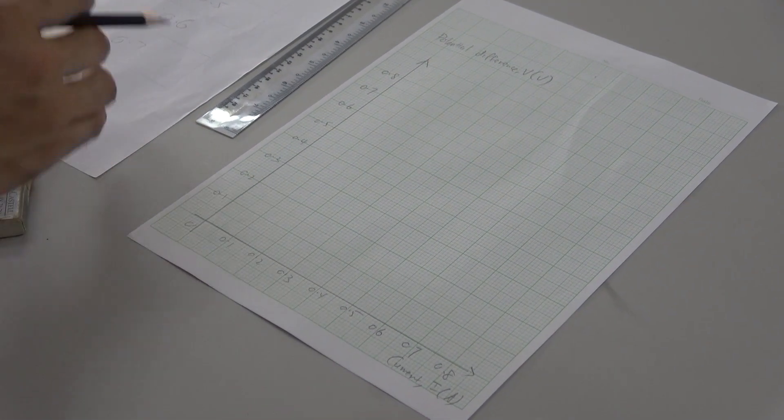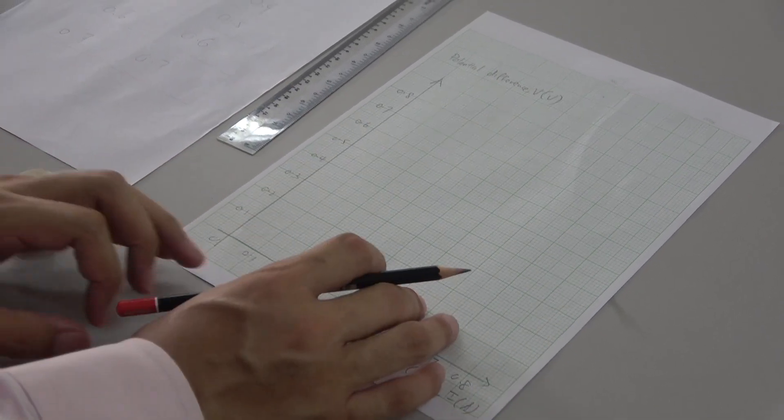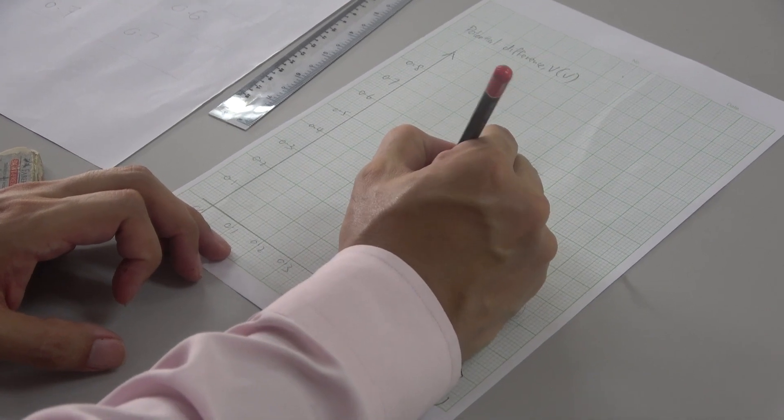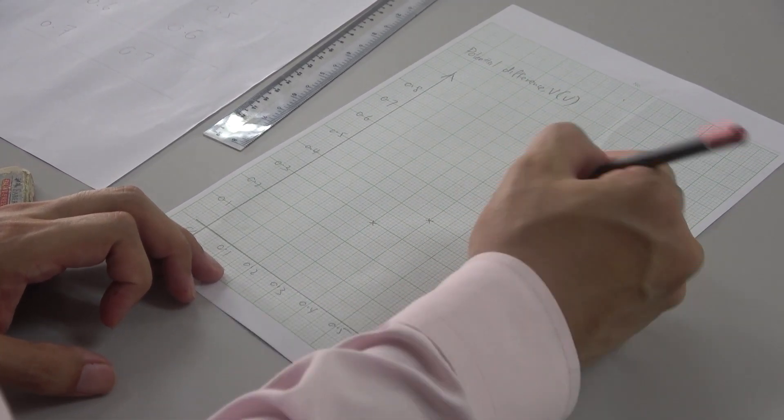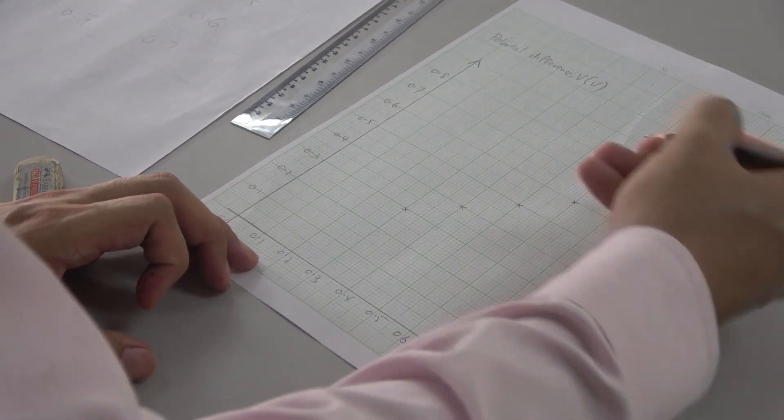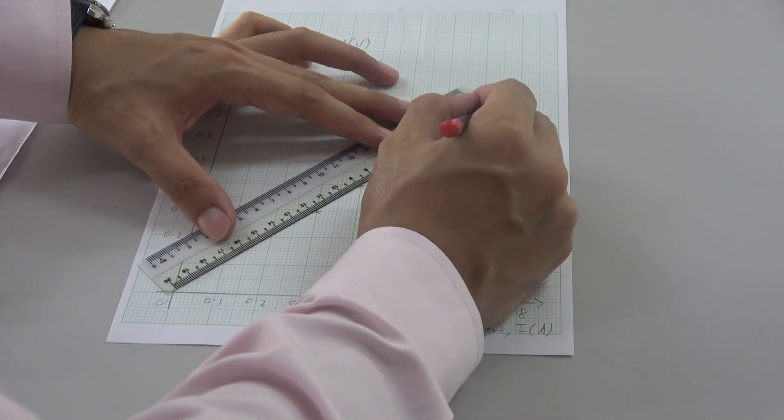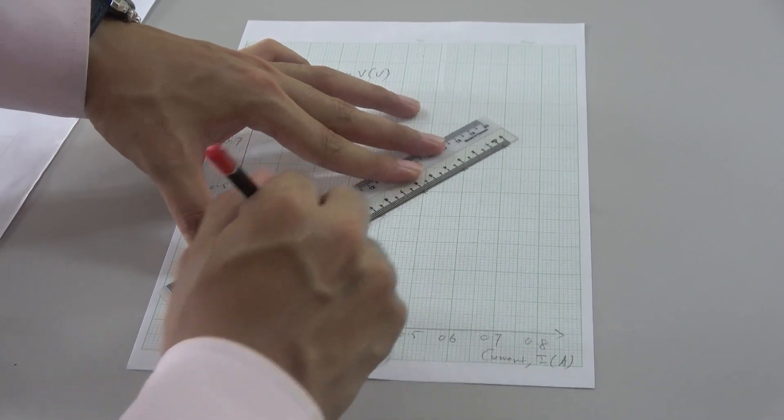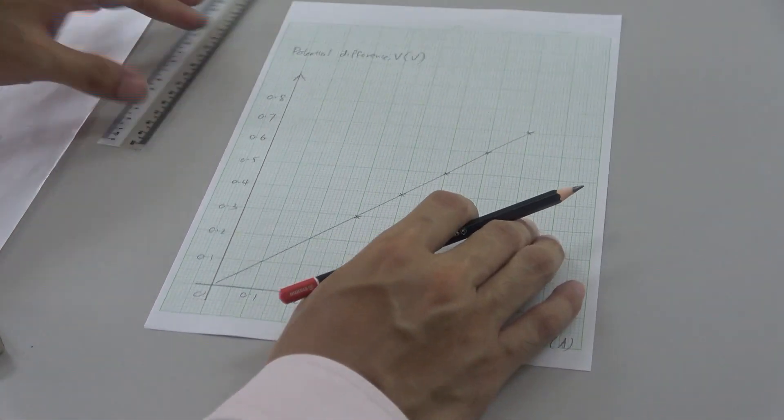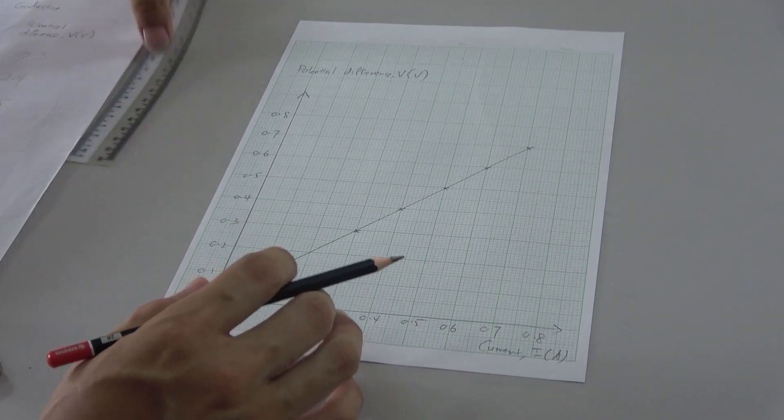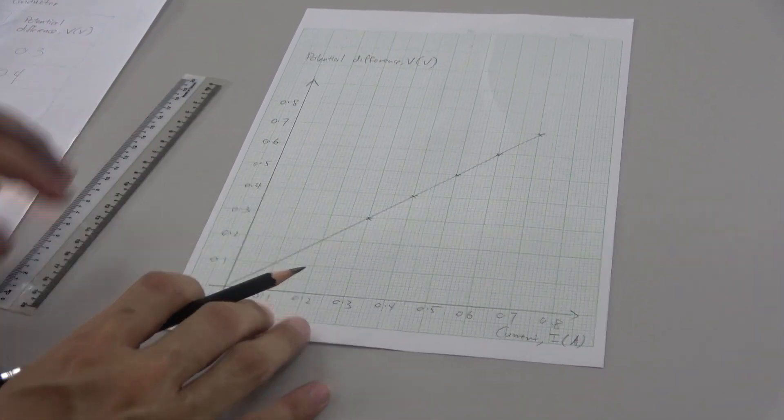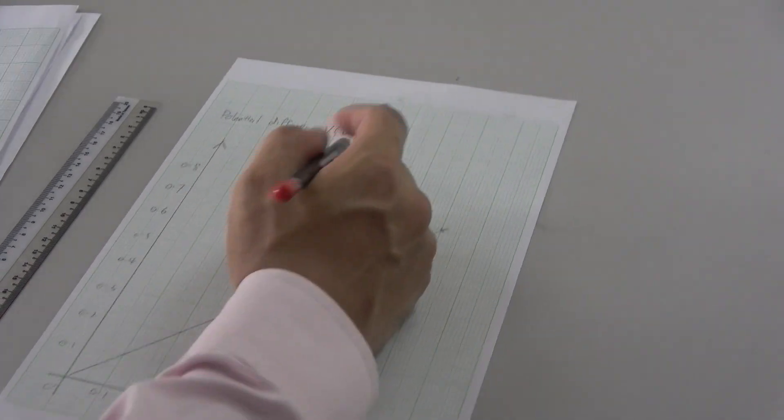I have drawn the axis for the current and the potential difference. Then, I will transfer the data from the table into the graph. We try to draw the best fit line. We obtain a straight line graph which passed through the origin of the graph. This is for ohmic conductor.